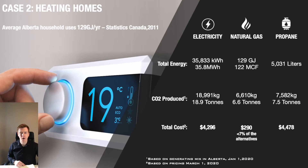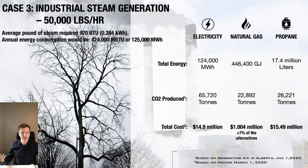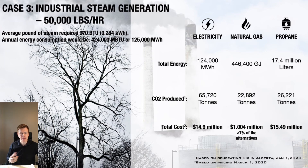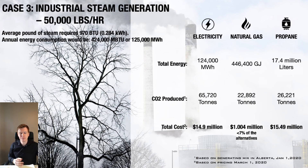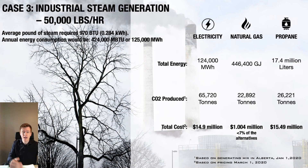Let's go to the third option, which is more of an industrial application — an analysis we actually did for a client here in Western Canada. They use about 50,000 pounds of steam per hour, and on an average annual basis they're using 125,000 megawatt hours of energy to produce that steam. Using natural gas they would spend about a million dollars and produce about 23,000 tons of CO2. If you were to electrify that load and use electricity here in Alberta, you would produce about 66,000 tons of CO2 and it would cost that facility $14.9 million — again, 14 to 15 times the price of natural gas. So you can see how electrification has significant cost implications and, quite frankly, sustainability implications using our current setup.